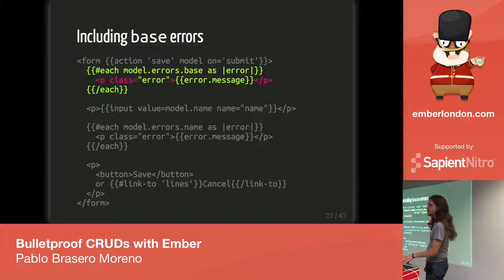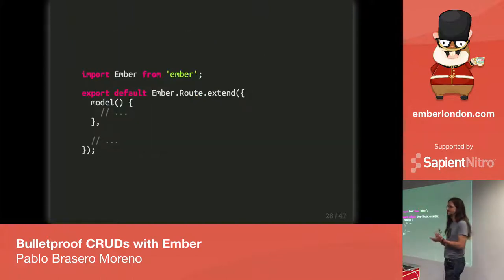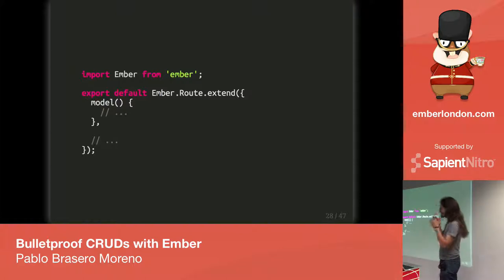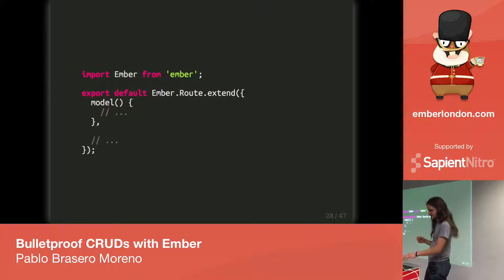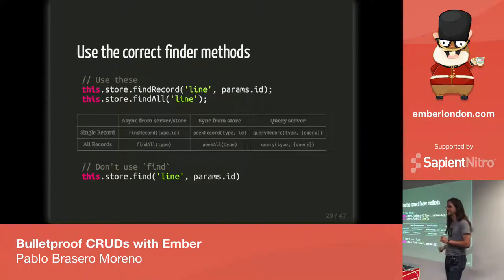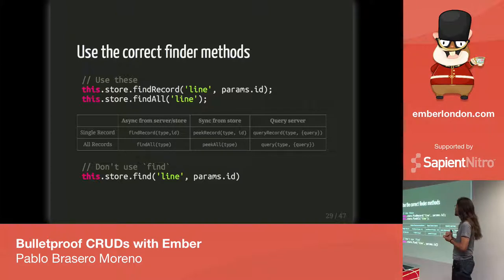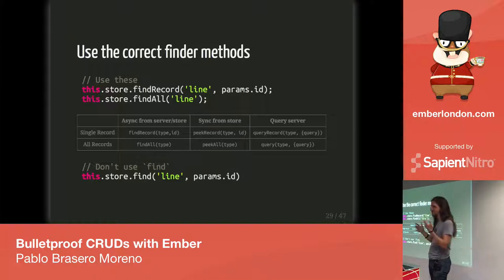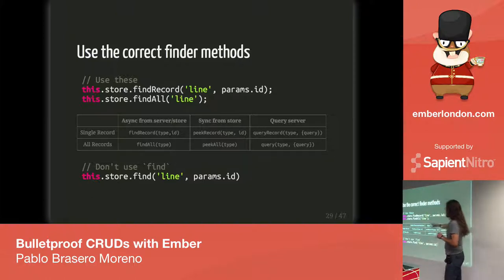Moving on to the routes: the first thing you normally do when creating a route is implement the model hook, and it's super simple. But I still find myself sometimes doing this.store.find instead of findRecord, because even though the old finders like all or getById have been removed, find still exists and works much the same way. It's useful to remember we really should be using findRecord and all the new finders that have been there since Ember 1.13.